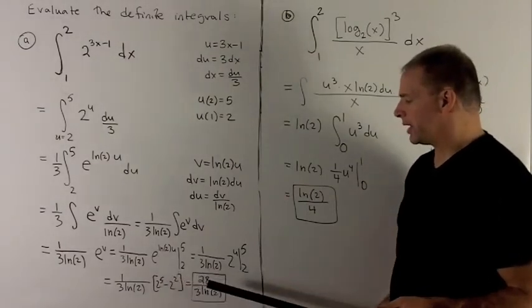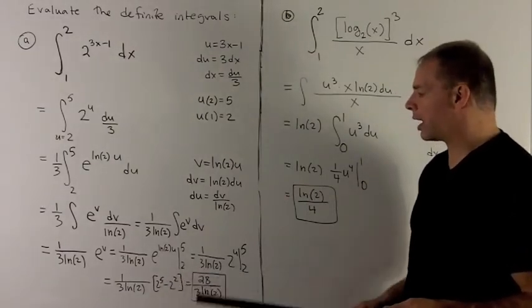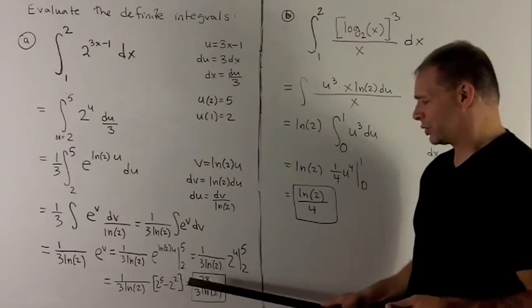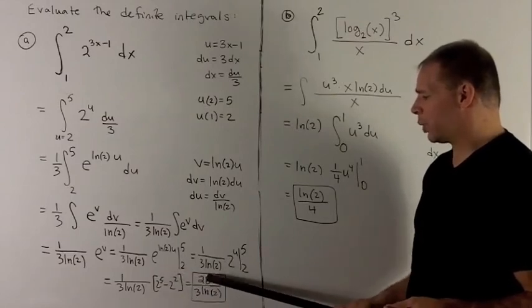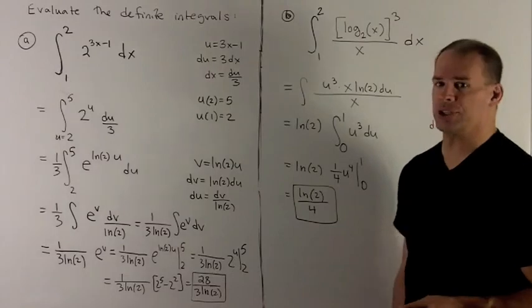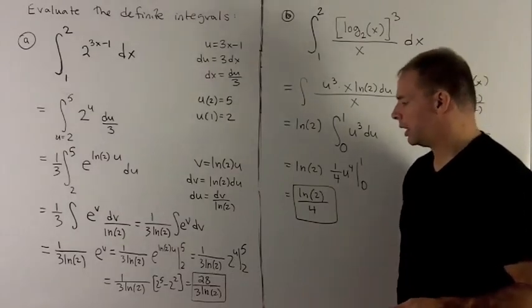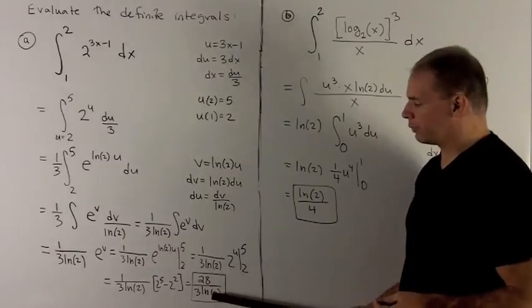2 to the 5th is 32. 2 squared is 4. The difference is 28. So I'm left with 28 over 3 natural log of 2. We could crunch that down further if we had a calculator.